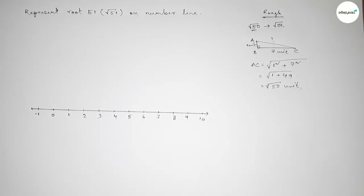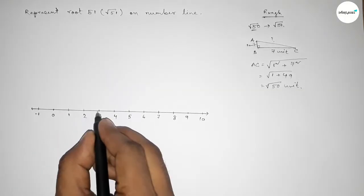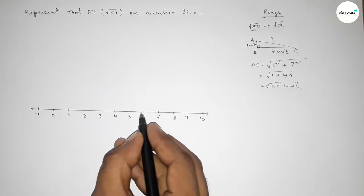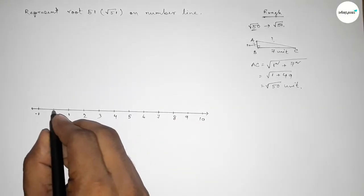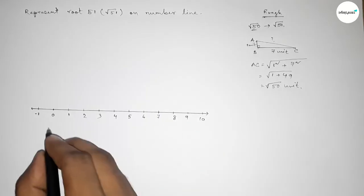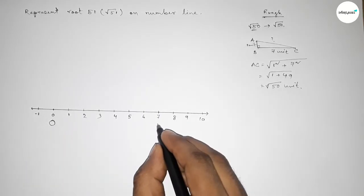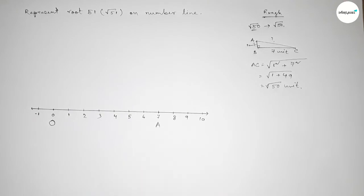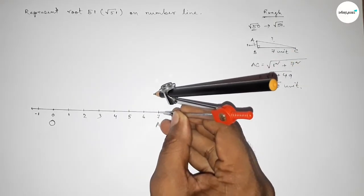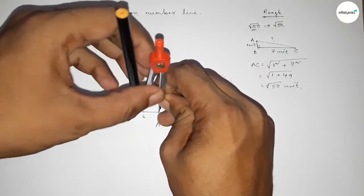Now applying this concept on the number line between 0 to 7, so the base is 7 unit length. Taking here point O at zero and point A at 7. Now we have to draw a 90-degree angle at point A, so putting the compass on point A and taking any length and drawing an arc.